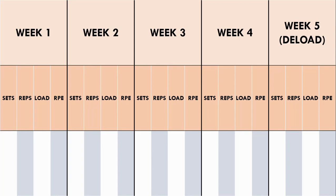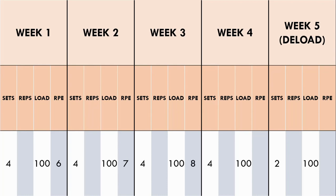Let's say for this athlete the load is 100 kilos, which will be used for the whole training block. Next, we need to determine how many sets will be performed per week — let's say 4 sets for each week, except for the deload. Now we have our sets and weight; the last thing to determine is how many reps will be performed. This is where RPE comes in. We can prescribe an increasing RPE each week to make each session progressively harder: RPE 6 in week one, RPE 7 in week two, 8 in week three, and 9 in the final week before a deload.